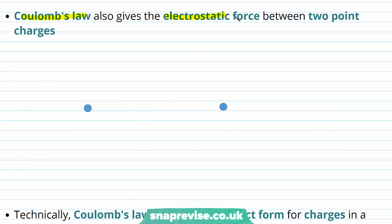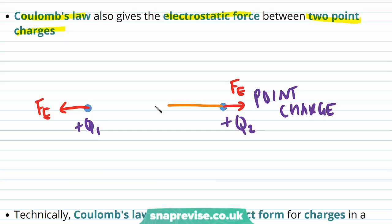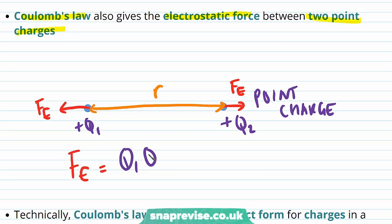Coulomb's law also gives the electrostatic force between two point charges — charges that exist at a certain point. If both are positive charges, there is an electrostatic force of repulsion repelling them away from each other. If we define the distance between these charges as R, the electrostatic force is given by Coulomb's law as Q1 times Q2 divided by 4π times epsilon 0 times R squared.